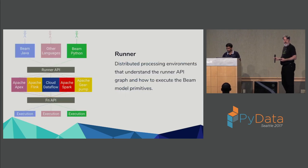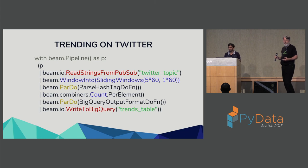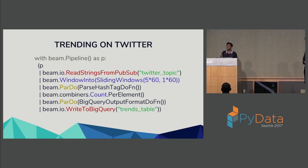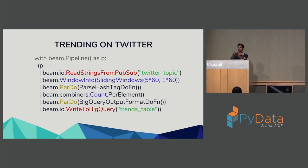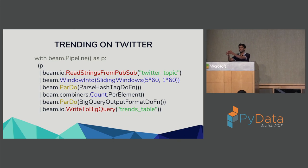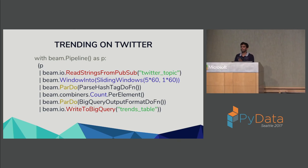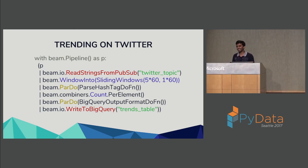Q: The syntax on some slides had a pipe character in it that I'm not familiar with. A: In Beam we override the OR/pipe character to say 'this is a P-transform that I want to pipe my input through.' It's not a Python-specific thing, it's a Beam thing.